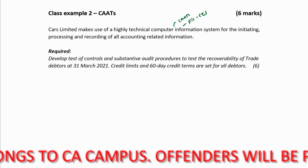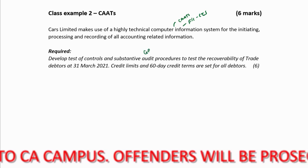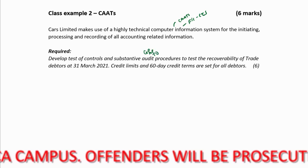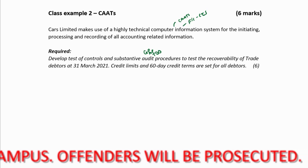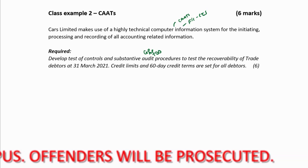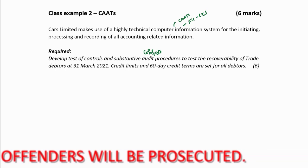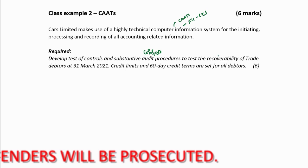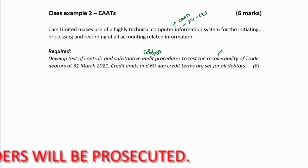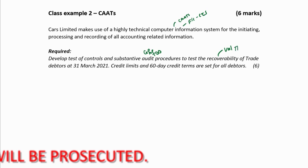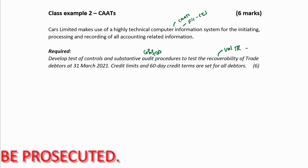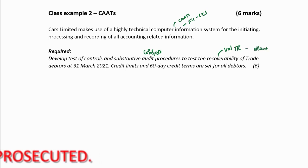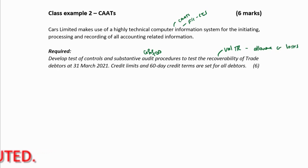Substantive audit procedures are automatically required: general procedures, analytical procedures, and tests of detail to test the recoverability of trade debtors at 31 March 2021. Recoverability is all about the valuation of your trade receivables, so you need to look at the allowance for credit losses. Credit limits and 60-day credit terms are set for all debtors.